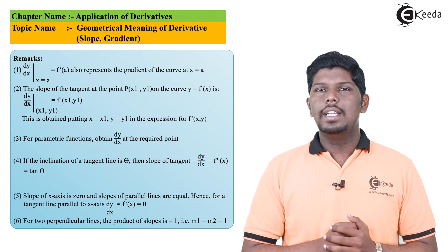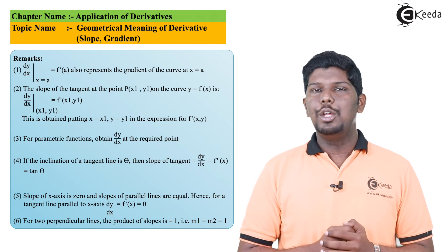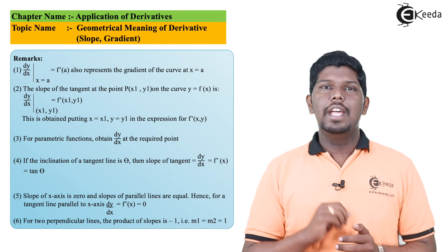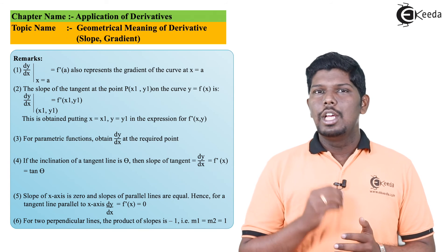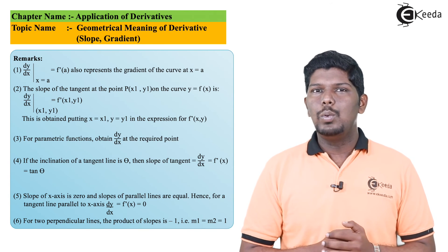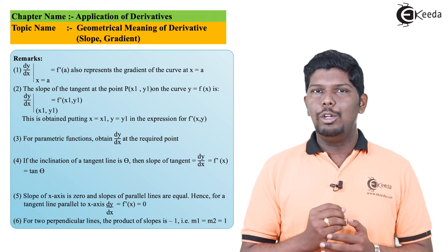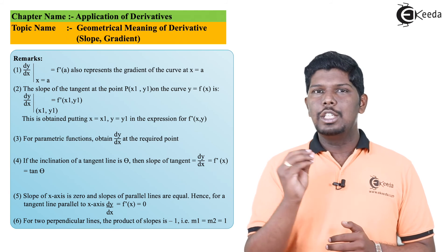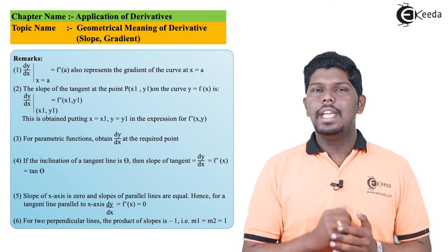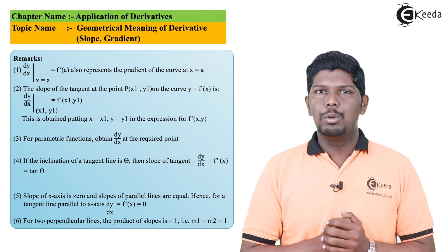Now the last point, that is point number 6, that we need to understand is that if two lines are perpendicular to each other, the product of their slope will be equal to minus 1. So in the further problems you will see that we need to find the equation of tangents and normal. So normal is basically a line which is perpendicular to tangent, and if you find the slope of tangent, just take its negative reciprocal.